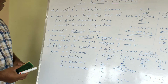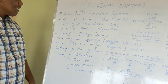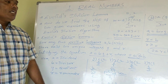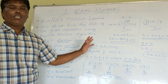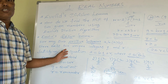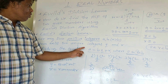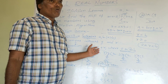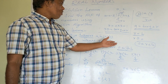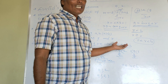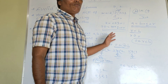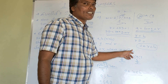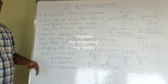So this is Euclid's Division Lemma. Once again, let us see the statement: for any two positive integers A and B, there exist two unique integers — the quotient Q and remainder R — satisfying the equation A equals B into Q plus R, where 0 is less than or equal to R, less than B. You get this equation by using the division fact: dividend equals divisor into quotient plus remainder. And the condition 0 less than or equal to R less than B means the remainder lies between 0 and the divisor.